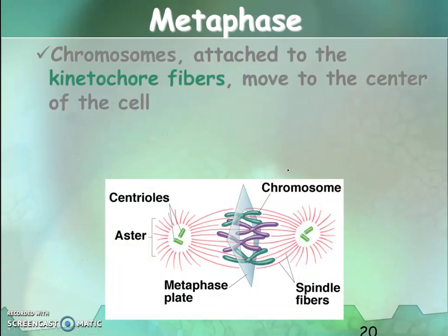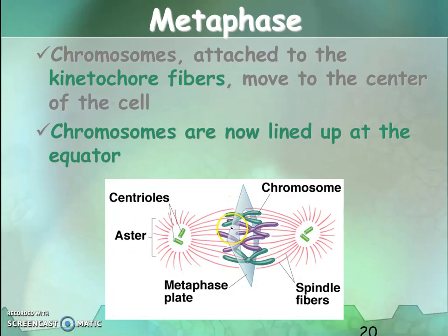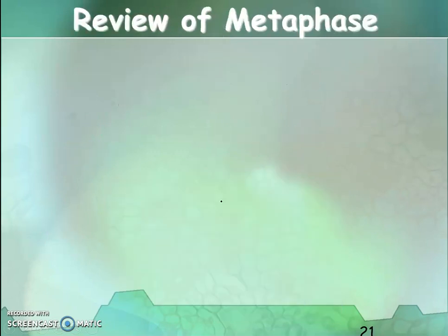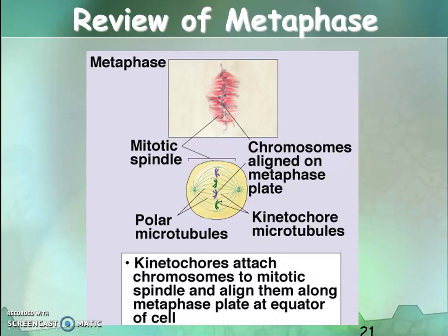In metaphase, the chromosomes attach to the kinetofibers. The chromosomes get lined up at the equator of the cell. The poles of the cell are at opposite ends, and the equator is in the middle. All chromosomes line up at the equator. To review metaphase: the kinetochores attach to the chromosome fibers, which are thread-like structures from microtubules, and align the chromosomes along the metaphase plate at the equator.